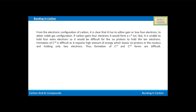From the electronic configuration of carbon, it is clear that it has to either gain or lose 4 electrons to attain noble gas configuration. If carbon gains 4 electrons it would form a C4 negative ion, but it is unable to hold 4 extra electrons, so it would be difficult for the 6 protons to hold the 10 electrons.